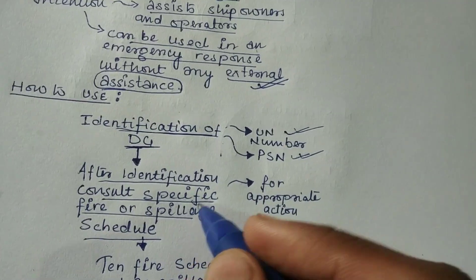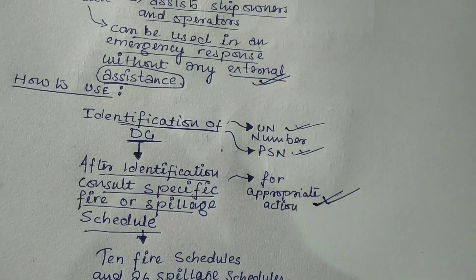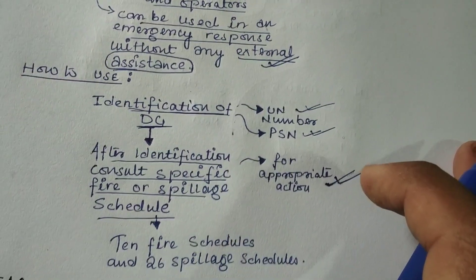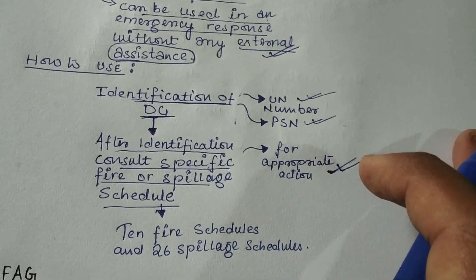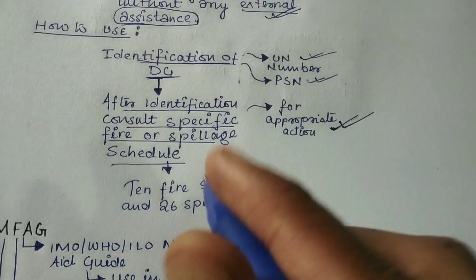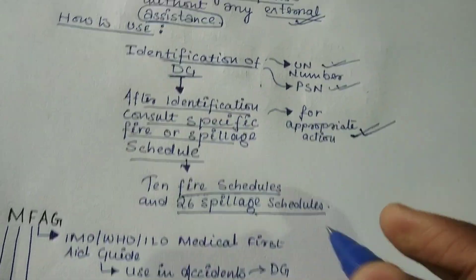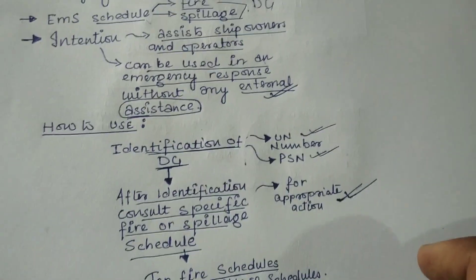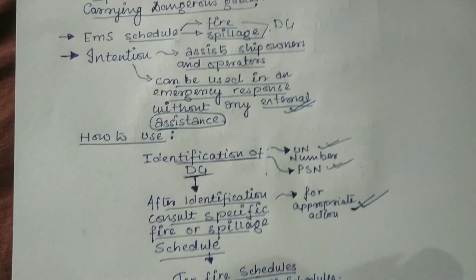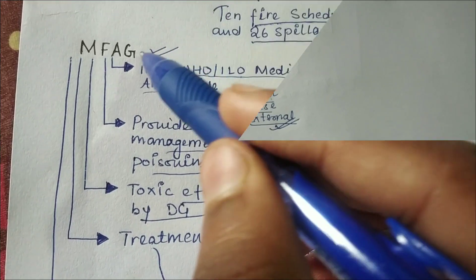Why do we need it? To take the appropriate action for that type of dangerous good. It contains 10 fire schedules and 26 spillage schedules. This much is required for your written exams.